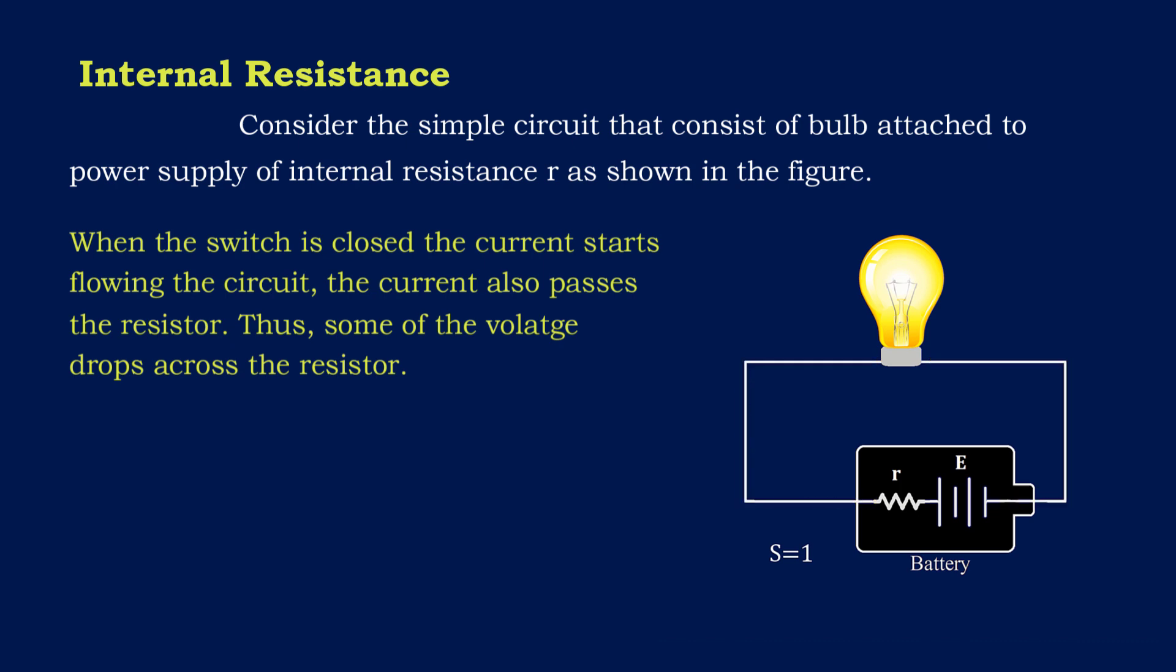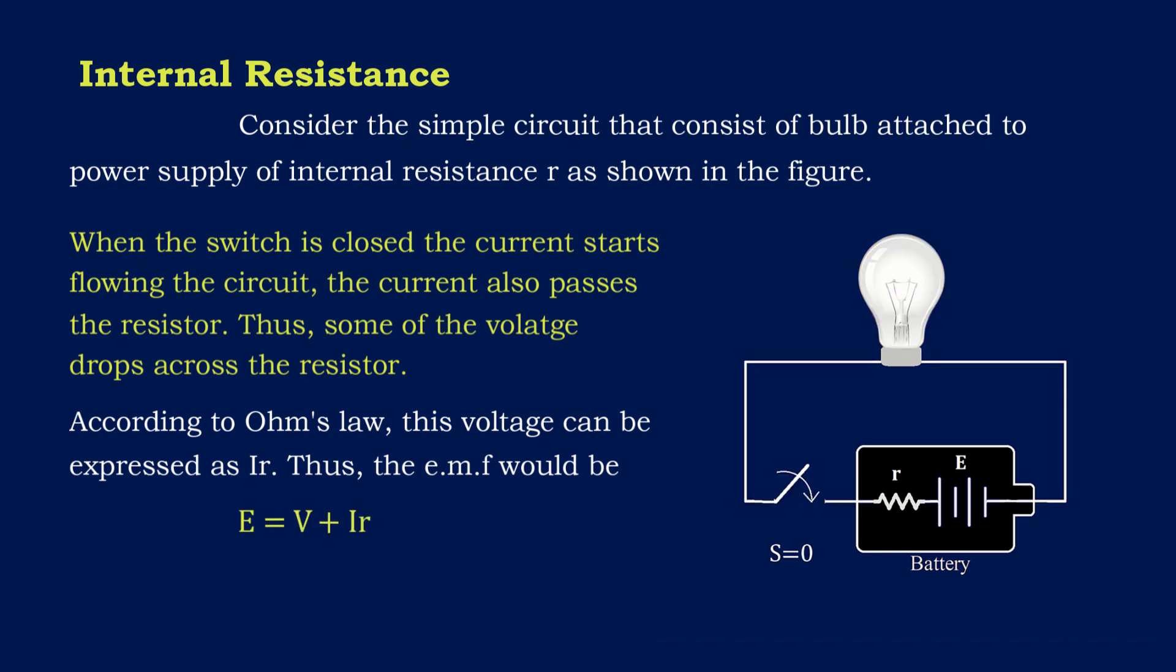Thus, some of the voltage drops across this resistor. According to Ohm's law, this voltage can be expressed as I times R. So, the formula for EMF is E equals V plus IR.